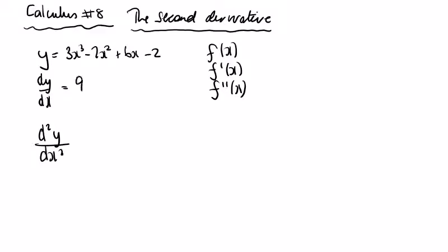So differentiate 9x squared minus 4x plus 6, and then differentiate a second time, so d squared y dx squared is going to be 18x minus 4.